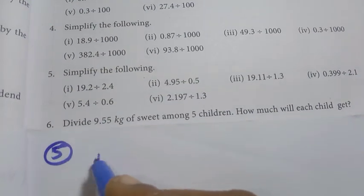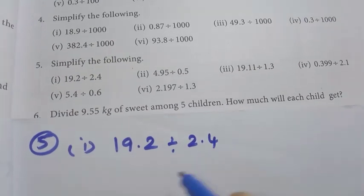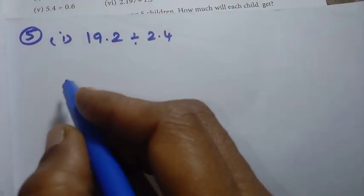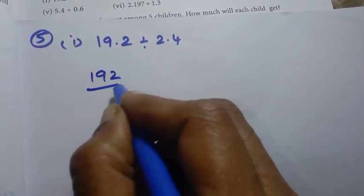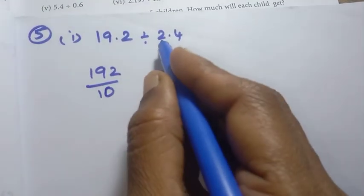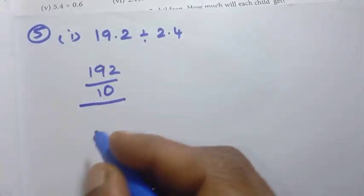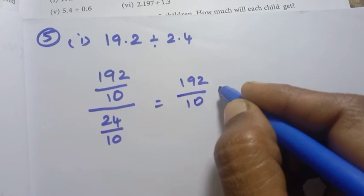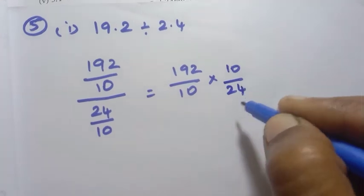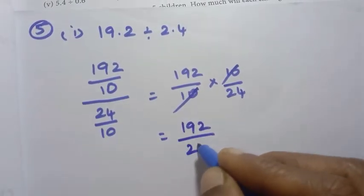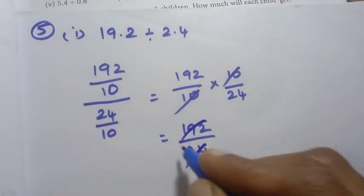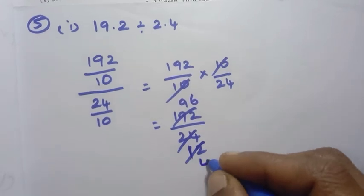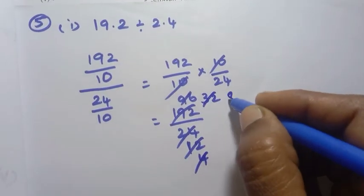Fifth exercise — simplify the following. First problem: 19.2 divided by 2.4. 19.2 has 1 decimal place: 192 by 10. 2.4 has 1 decimal place: 24 by 10. So 192 by 10 into 10 by 24 — the 10s cancel, giving 192 by 24. Dividing: 24 into 192 gives 8. The answer is 8.